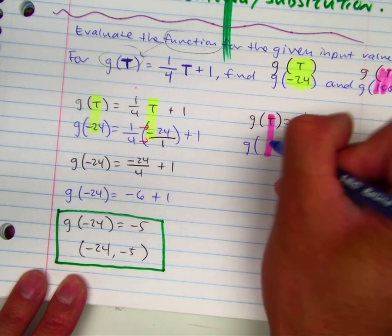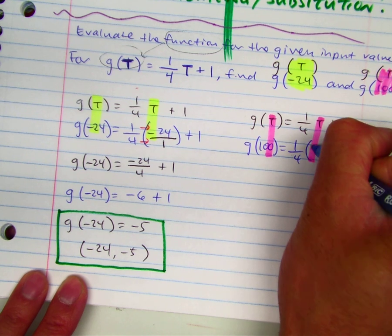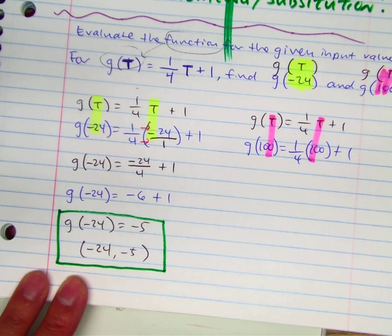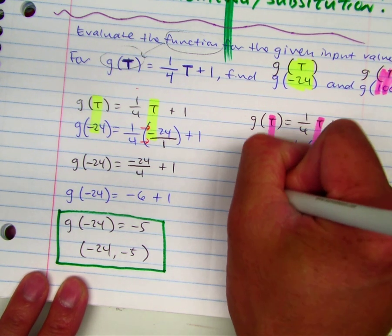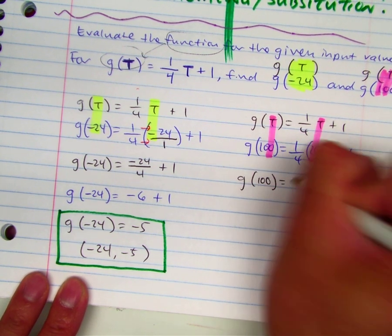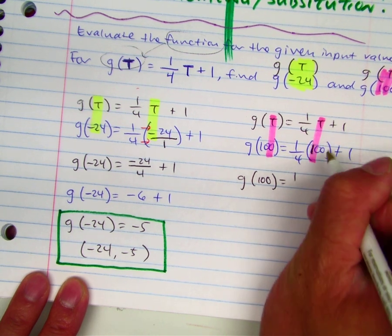G of one hundred equals one-fourth of one hundred plus one. G of one hundred equals, that's a one hundred. How do you make one hundred a fraction?